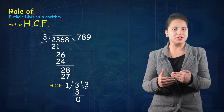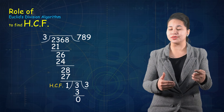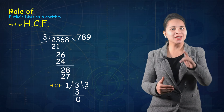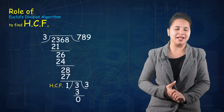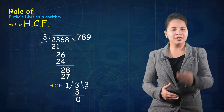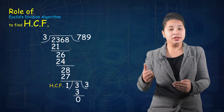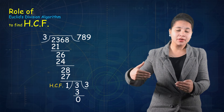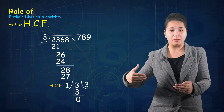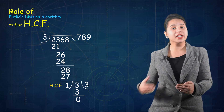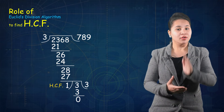This long division process is what we call Euclid division lemma, which we discussed in the previous lecture. Euclid division lemma is a proven statement. Using it in algorithmic form — that is, in a step-by-step well-defined form — we will find out the HCF.